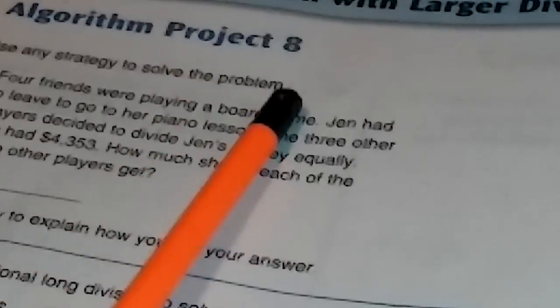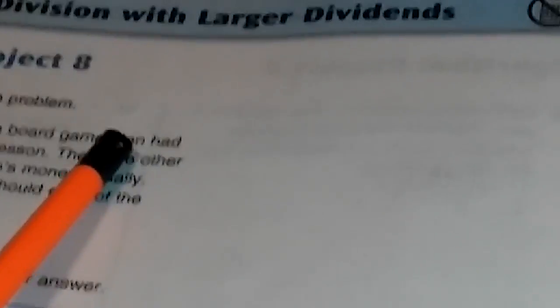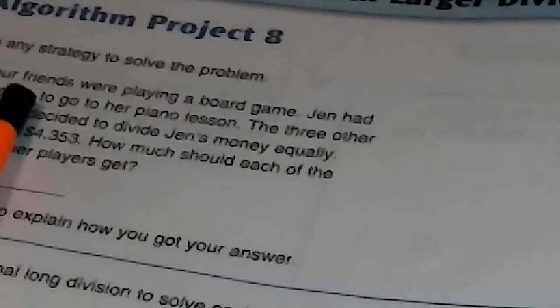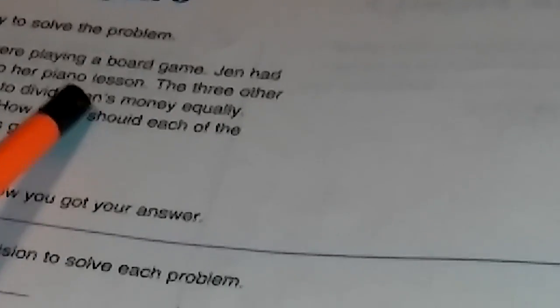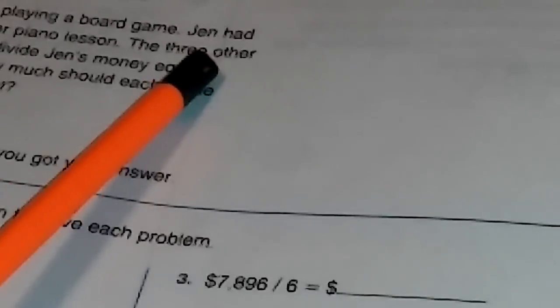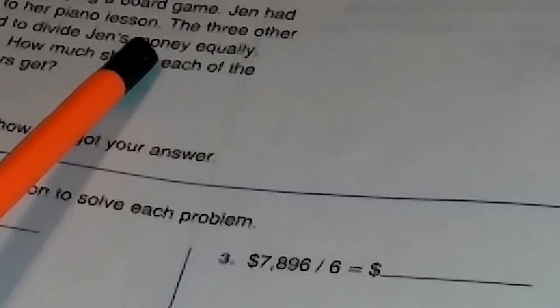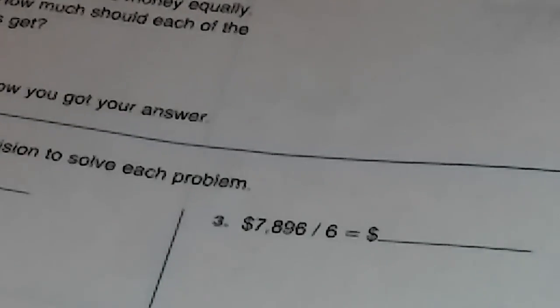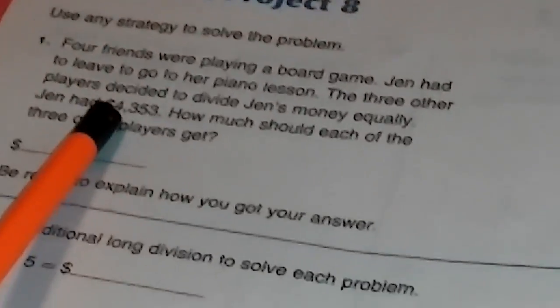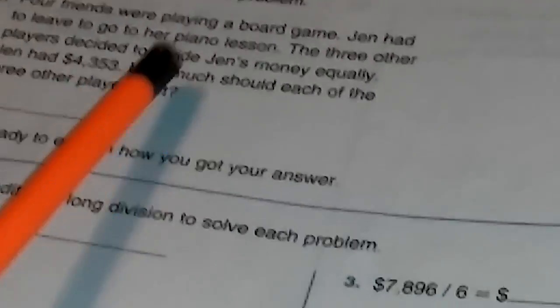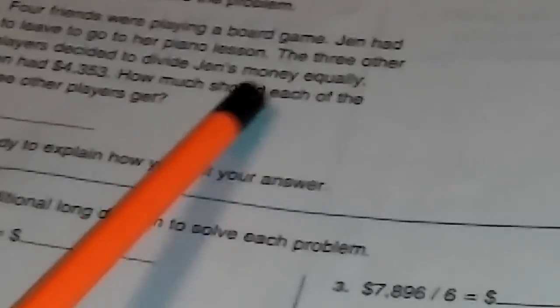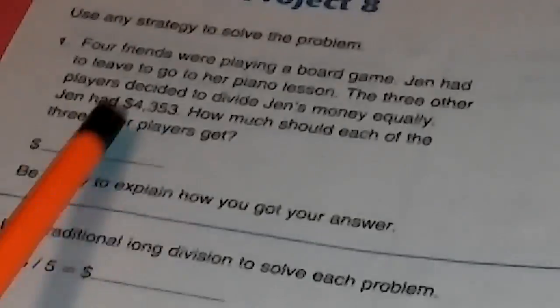Use any strategy to solve the problem. Four friends were playing a board game. Jen had to leave to go to her piano lesson. The three other players decided to divide Jen's money equally. Jen had 4,353. How much should each of the three other players get?